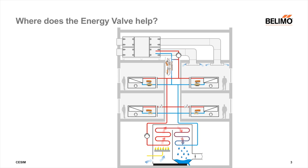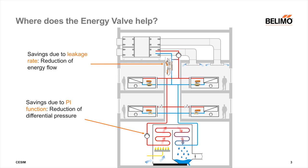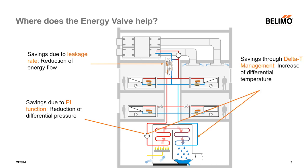Where does the energy valve help? The energy valve helps in three places in a building: reduction of the energy flow through a better leakage rate; with hydraulic pressure independence, the pump performance can be reduced by reducing the differential pressure at the pump; and increasing the differential temperature in a condensing boiler improves efficiency. I would like to briefly address these three points.